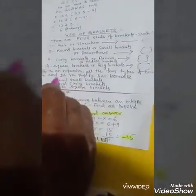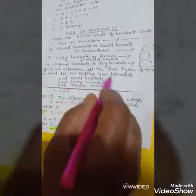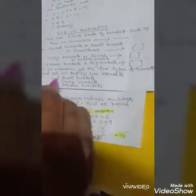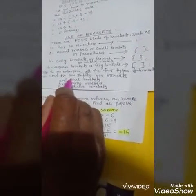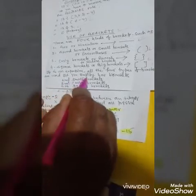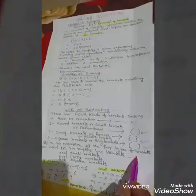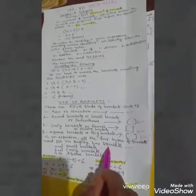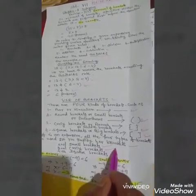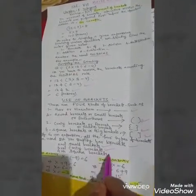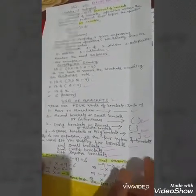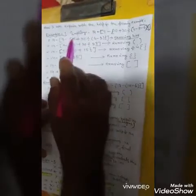If in an expression all four types of brackets are used, first simplify bar brackets, second small brackets, third curly brackets, fourth square brackets. This can be explained by the following example.